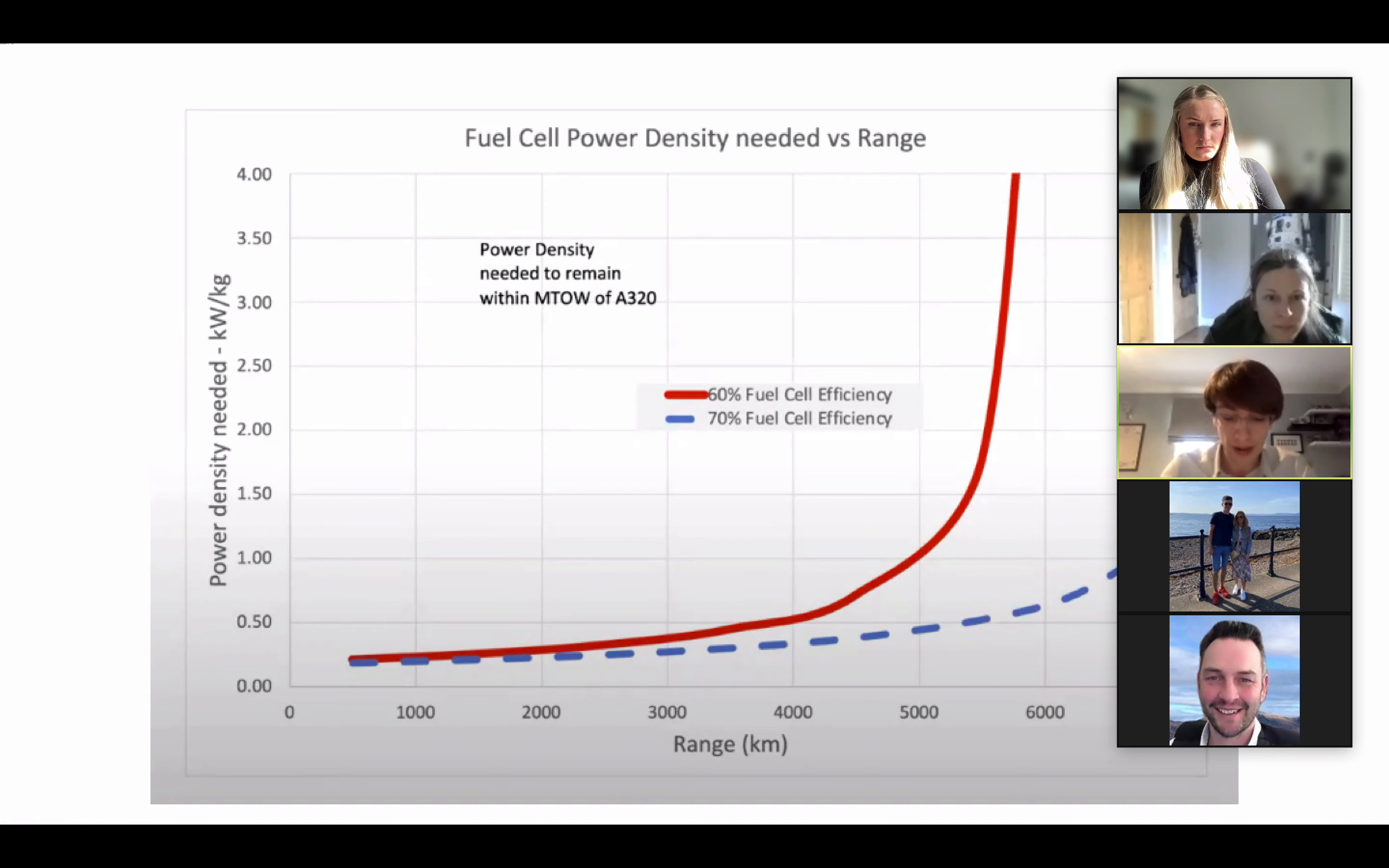If you look at this graph displayed, you can see what a difference a 10% improvement in efficiency makes. So for instance, a 60% efficient fuel cell at one kilowatt per kilogram provides an aircraft of 4,000 kilometers in range, while 70%, just a 10% improvement, delivers a range of almost 7,000 at one kilowatt per kilogram.